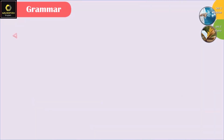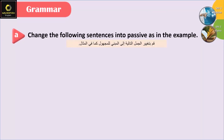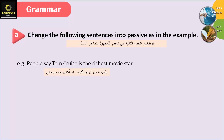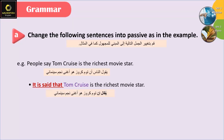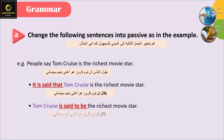Let's see the first question: change the following sentences into passive as in the example. 'People say Tom Cruise is the richest movie star.' We can say either: 'It is said that Tom Cruise is the richest movie star,' or 'Tom Cruise is said to be the richest movie star.'